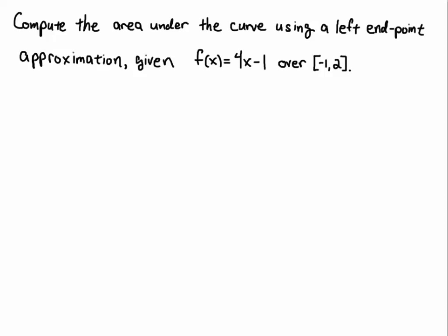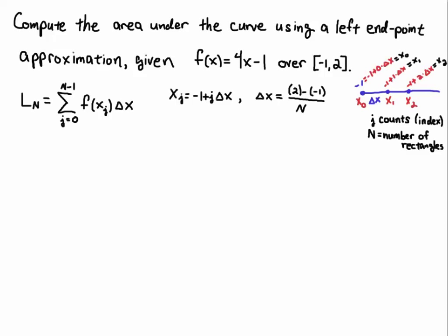So the first thing we have to do is set up a grid and our left endpoint approximation. The formula for the left endpoint approximation starts with an index of j equals 0 and then you sum until you get up to the number of rectangles minus 1. So this is going to be from the left endpoint and then you don't include the rightmost endpoints. So hence the j is 0 and you go to the second to last grid point. That's the left endpoint approximation.